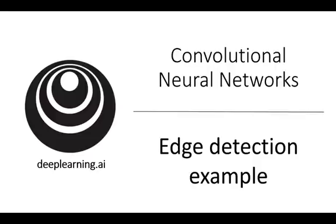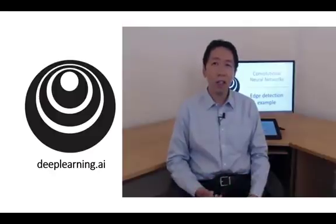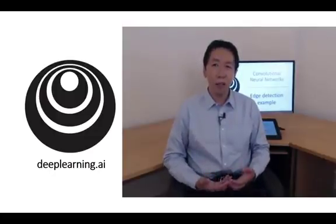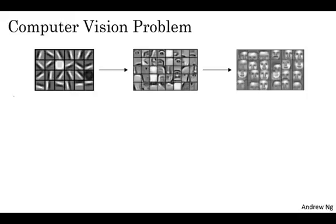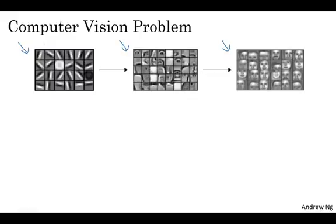The convolution operation is one of the fundamental building blocks of a convolutional neural network. Using edge detection as the motivating example, in this video you see how the convolution operation works. In previous videos, I've talked about how the earlier layers of the neural network might detect edges, and then the somewhat later layers might detect parts of objects, and then even later layers maybe detect parts of complete objects like people's faces. In this video, you see how you can detect edges in an image.